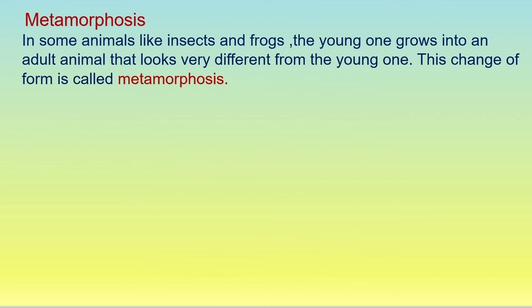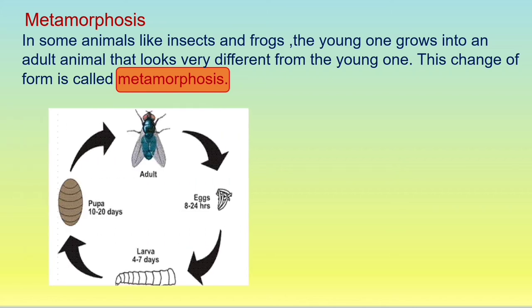Just revising metamorphosis again: in some animals like insects and frogs, the young one grows into an adult animal that looks very different from the young one. This change in form is called metamorphosis. Now on your screen we are going to see the metamorphosis of a housefly. An adult fly lays some eggs; in about 8 to 24 hours the larva comes out, then it forms a pupa, and soon it becomes an adult fly.